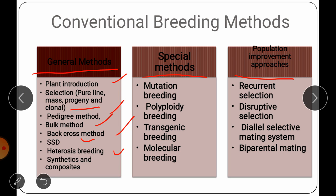Special breeding methods are used very rarely but are employed for the improvement of crop plants. These include mutation breeding, polyploid breeding, transgenic breeding, and molecular breeding. The third group is population improvement approaches — methods used to make improvement in already existing varieties. These include recurrent selection, disruptive mating, diallele selective mating, and biparental mating.